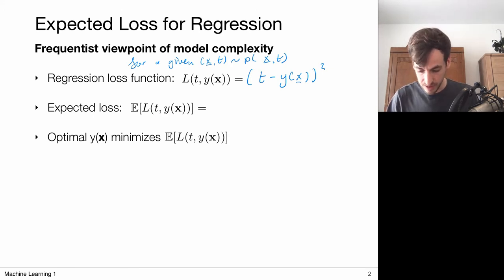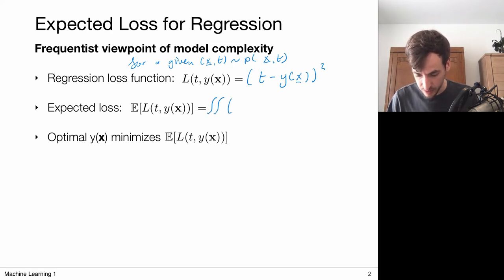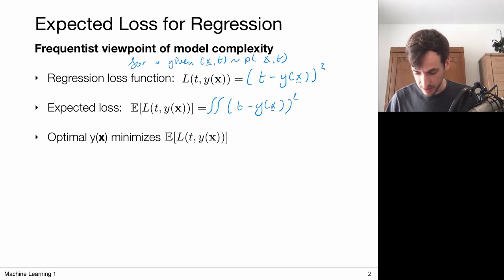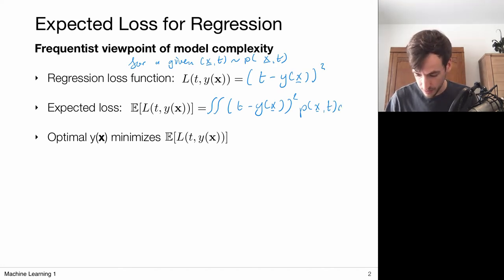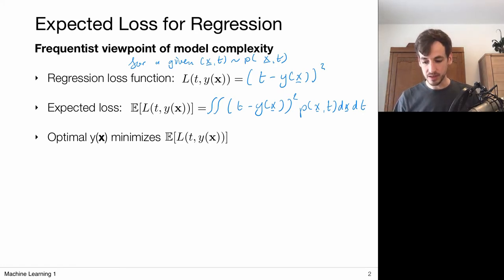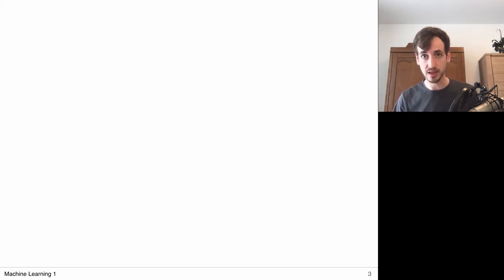So let's write it out. The expected loss is really the definition of expectation: we integrate over our loss between my prediction and the target, weighted with the probability for this combination of X and T happening, integrated for all X and all T. It takes some getting used to this probabilistic setting, so let's go to a drawing and an example to make sure we're all on the same page.